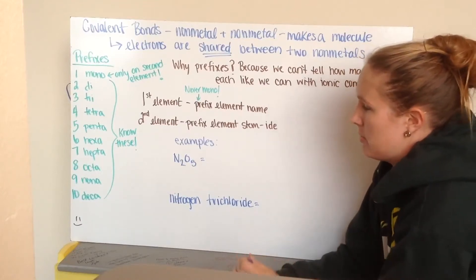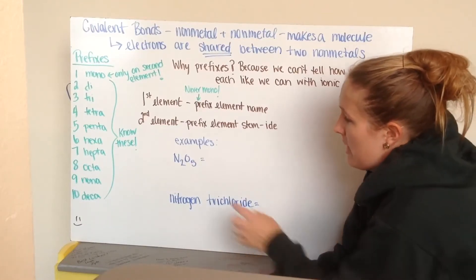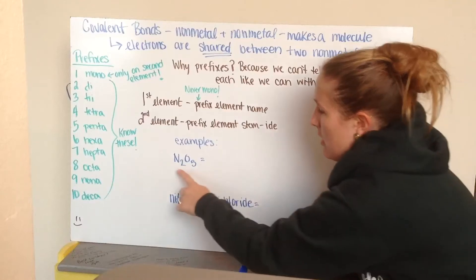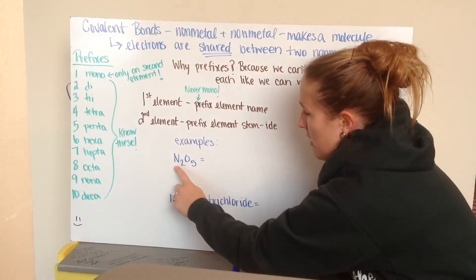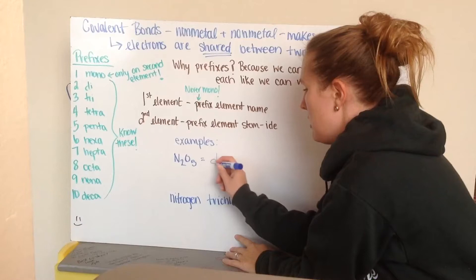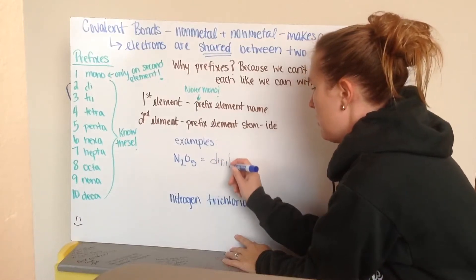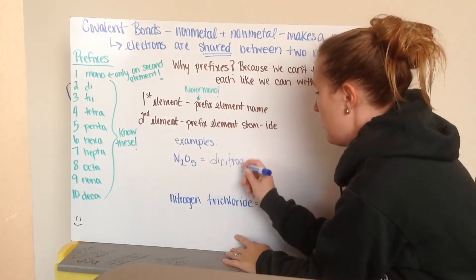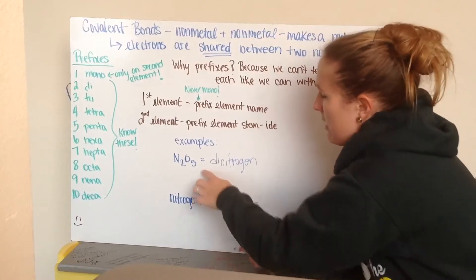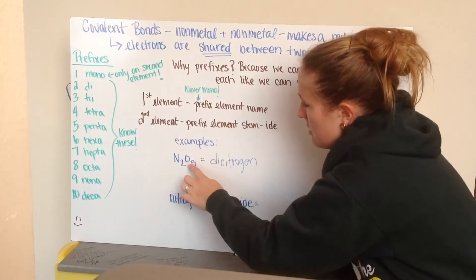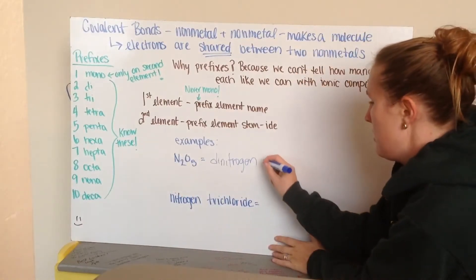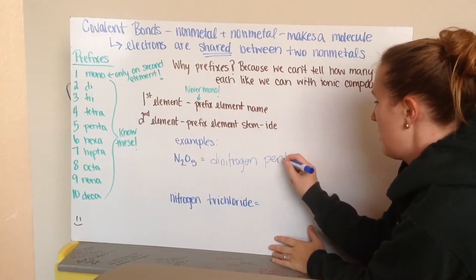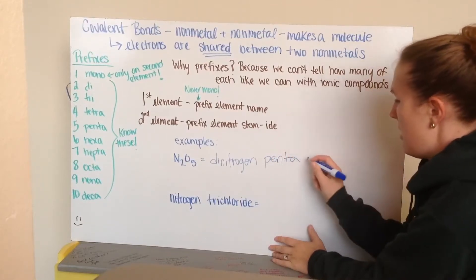So, let's go through two examples. The first example I have is N2O5. N2, this 2 tells me I have 2 nitrogens. So, I have dinitrogen. And then 5 oxygens. So, that means I have penta and then oxide.